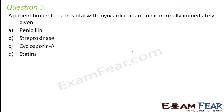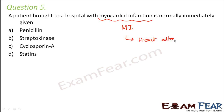Question number five: a patient brought to a hospital with myocardial infarction is normally immediately given — penicillin, streptokinase, cyclosporin A, or statins? First, let's understand what myocardial infarction is. Myocardial infarction, abbreviated as MI, refers to a heart attack. It occurs when the blood flow to the heart gets blocked, which can damage heart tissues and be life-threatening.